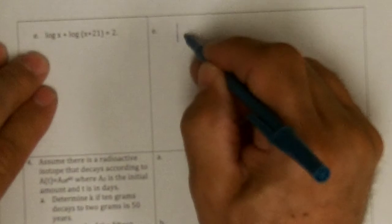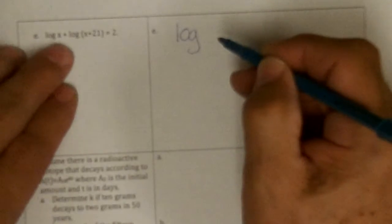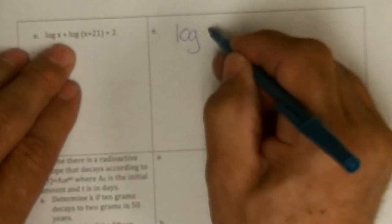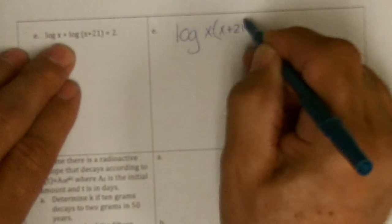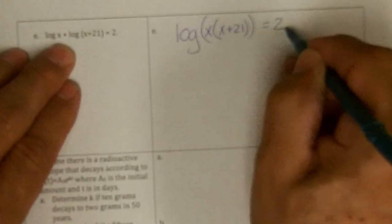To get it to be a single log, I'd have log, and these are both base 10, of x times x plus 21. The log of all of that equals 2.